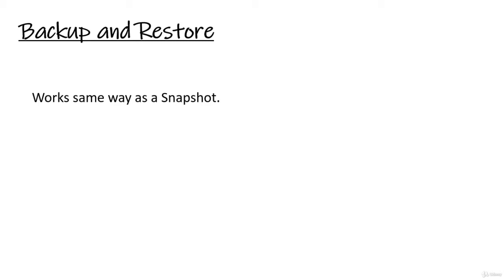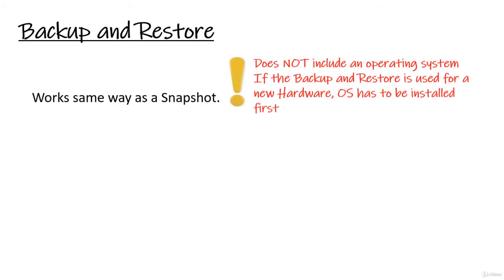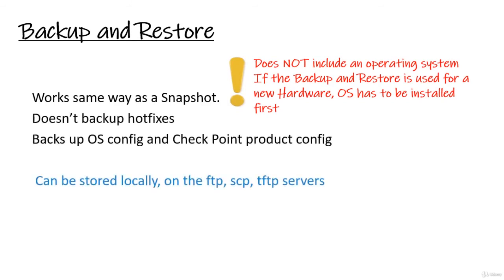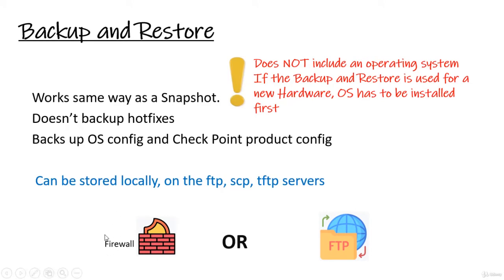Because it does not include the operating system, when you import a backup file to a new appliance, you have to install the operating system first — whereas during snapshot recovery, you don't. It also does not back up hotfixes, as those are kind of part of the operating system. The backup can be stored locally on your firewall appliance or on FTP, SCP, or TFTP servers.